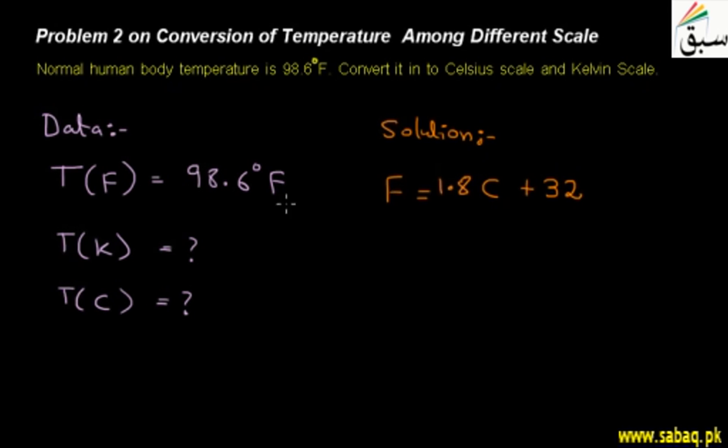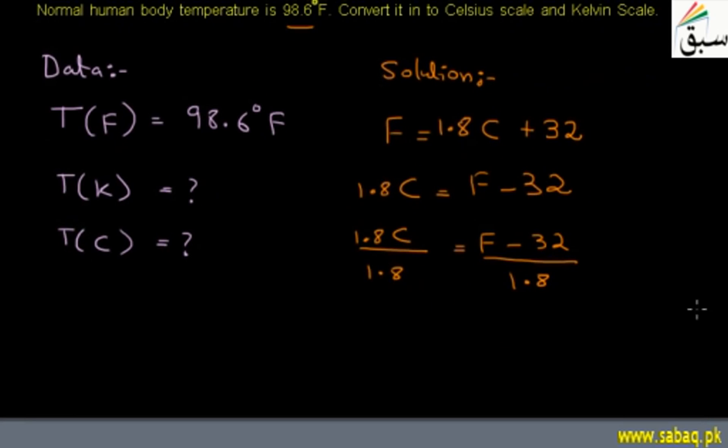Students, we have given Fahrenheit, so we want to convert to Celsius. We want to keep 1.8 Celsius on one side, and F minus 32. Now we divide by 1.8. Students, we divide from both sides. The equation is divided by 1.8. F minus 32, all divided by 1.8. This is a mathematical operation which we perform on both sides of the equation.